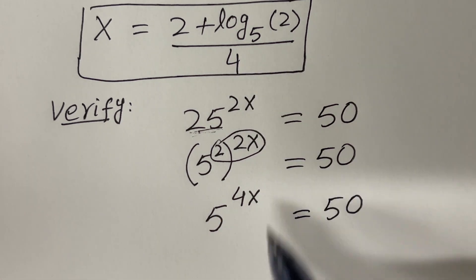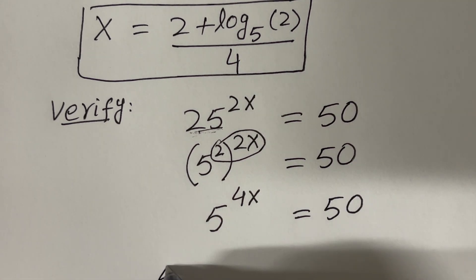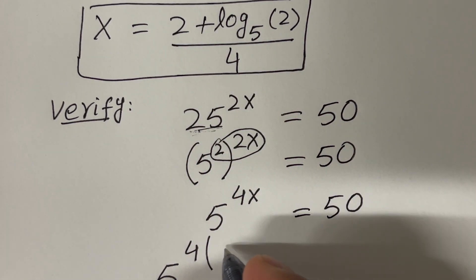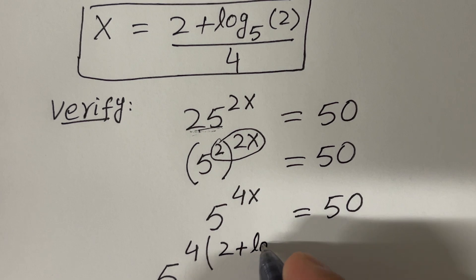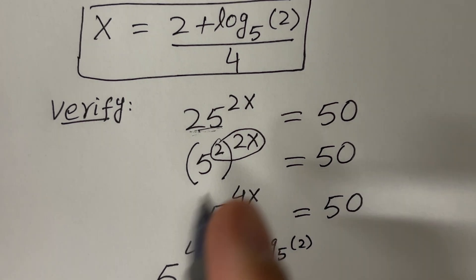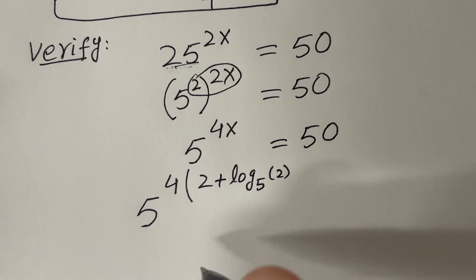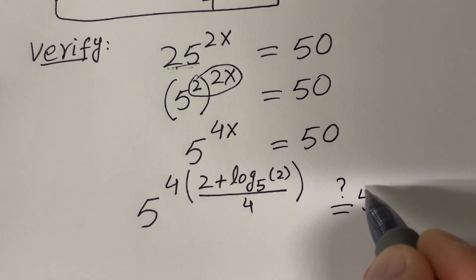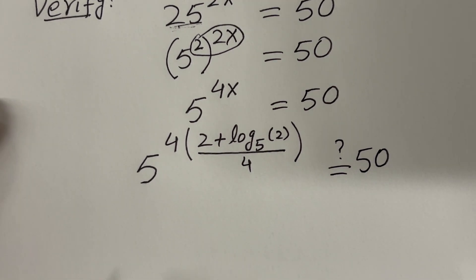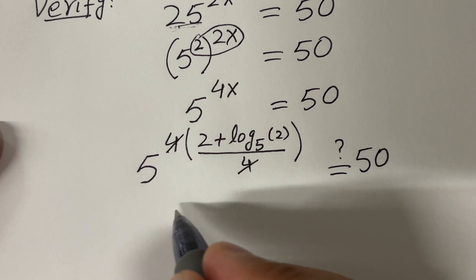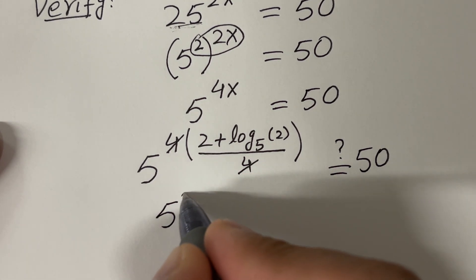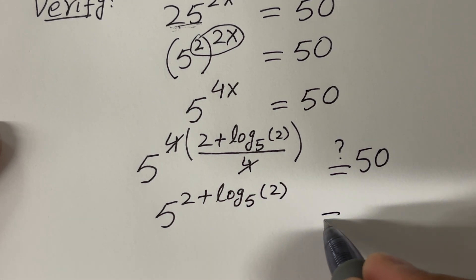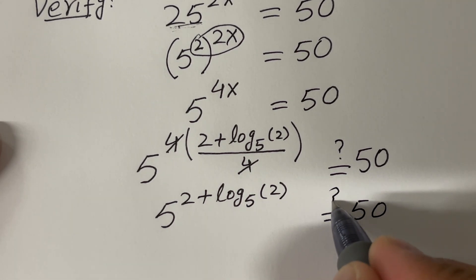Now we want to plug in this value here. So we will have 5 raised to the power 4, and let's plug in this value: 2 plus log base 5 of 2, divided by 4 — whole divided by 4. And we want to see if this is equal to 50 or not. The 4 and 4 will cancel each other, so the left-hand side is 5 raised to the power 2 plus log base 5 of 2, and the right-hand side should be 50.